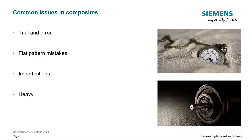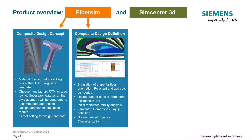Teams also have no way to account for the actual fiber orientations after the plies are laid on the molds in their FEA to ensure there aren't structural issues, so their parts are overbuilt and heavy to ensure they don't break. There is also an increased chance of failure and risk due to inconsistent production quality.